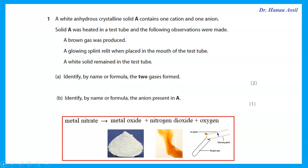Heating a metal nitrate gives the metal oxide — that would be the white solid. It gives nitrogen dioxide, which is the brown gas, and a gas that relights a glowing splint. The gas is oxygen. So the two gases are nitrogen dioxide and oxygen.